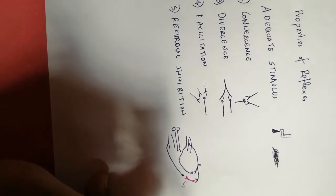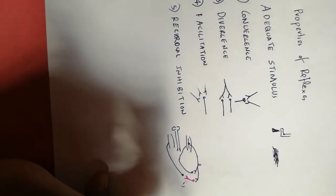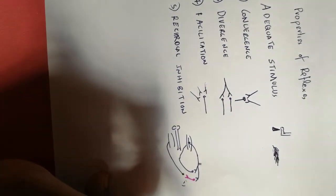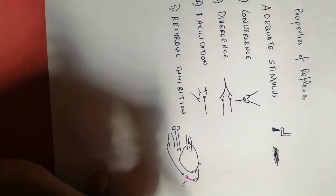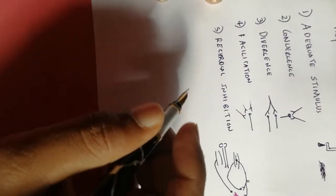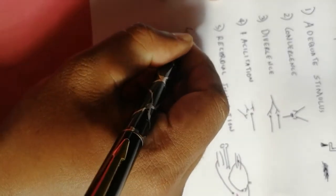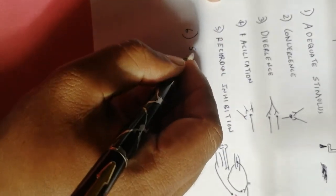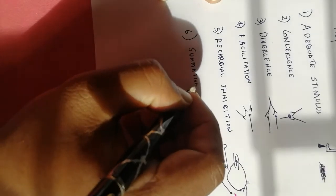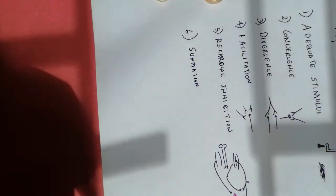You should have learned different types of synaptic inhibition, like presynaptic inhibition and postsynaptic inhibition. Another concept is summation, which can be of two types: spatial summation or temporal summation.